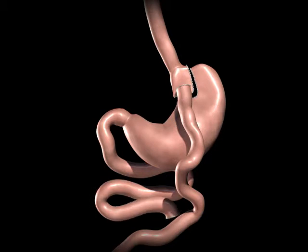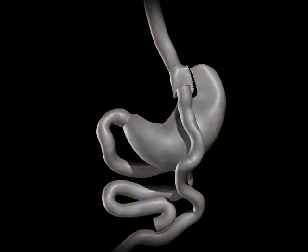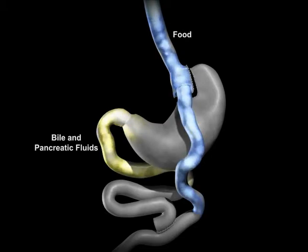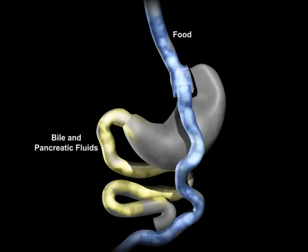The upper portion of the small intestine is reconnected to the lower portion of the intestine. The bile and pancreatic fluids from the liver and pancreas allow food to be completely digested.